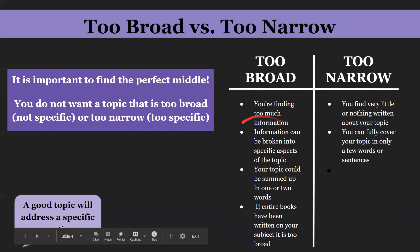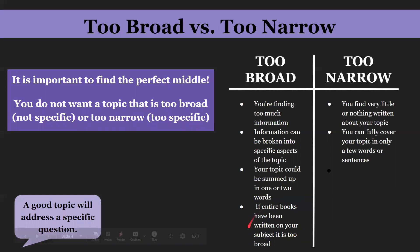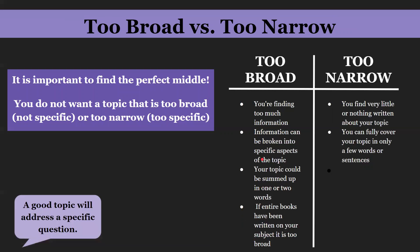Another sign of too broad: if your topic could be summed up into one or two words, that means it can only be talked about a little bit — that would be too broad. And if entire books have been written on your topic, it is too broad. That means there's way too much information, and that is not good for a paper that needs to be specific enough for your teacher and your audience to understand.